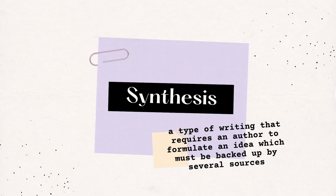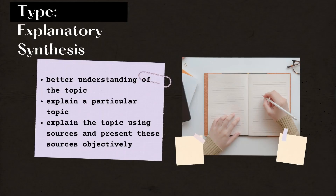Your goal is either to explain or to present an argument. There are two types of synthesis: the first is explanatory and the second is argument synthesis. An explanatory synthesis helps readers get a better understanding of a topic. Instead of arguing a point, the goal is to explain a particular topic. In the body, you explain the topic using sources and present these sources objectively.